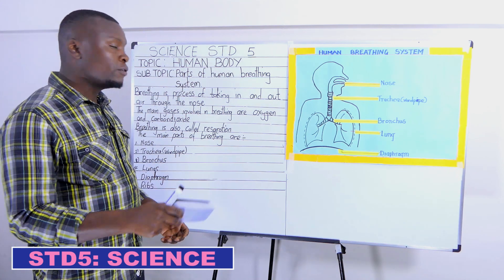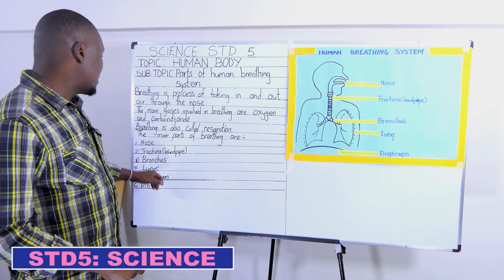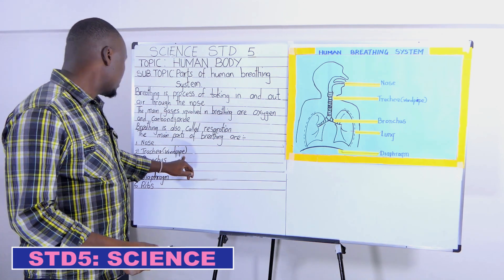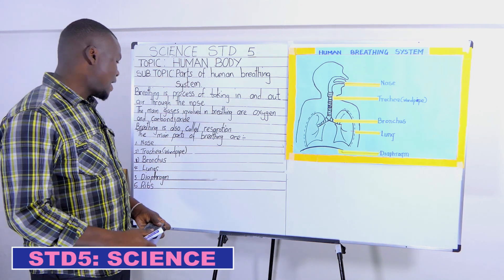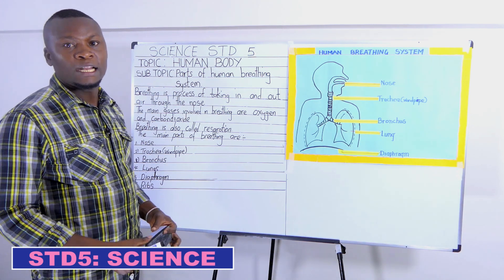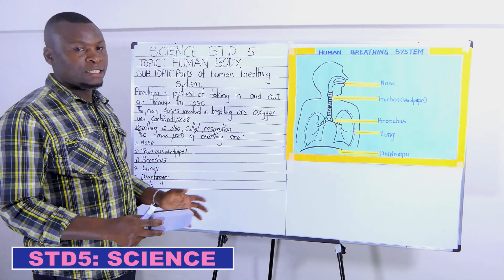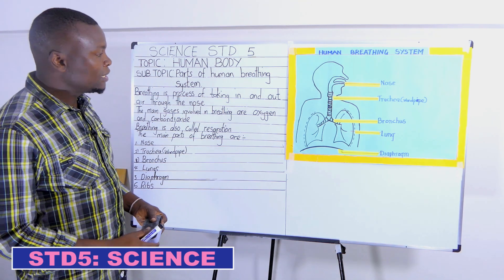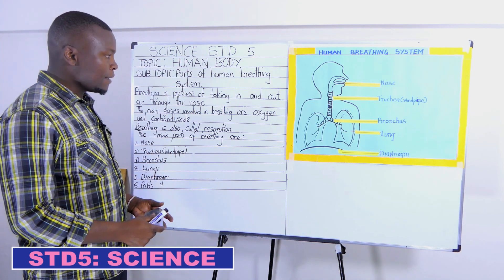Our first body part involved in breathing in and out is the nose, followed by the trachea — sometimes referred to as the windpipe — then we have the bronchus, the lungs, the diaphragm, and the ribs. Even though the ribs might not be involved directly in breathing in and out, they are very important since they protect our inner respiratory delicate parts, which are the lungs, the diaphragm, the bronchus, and the trachea.